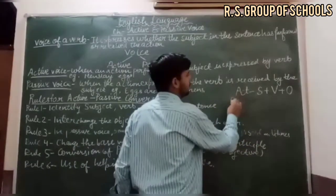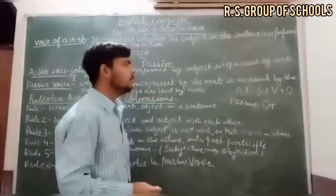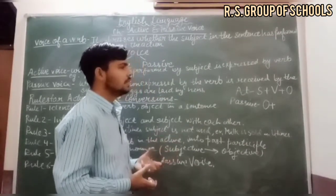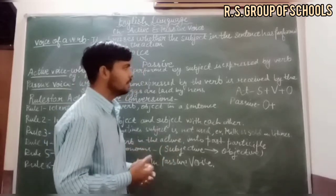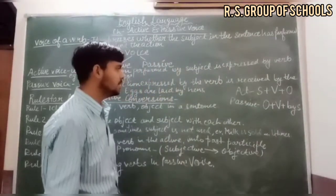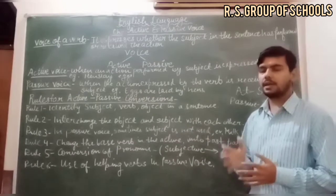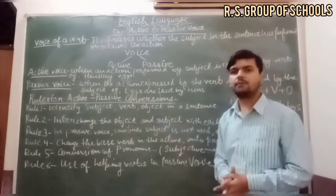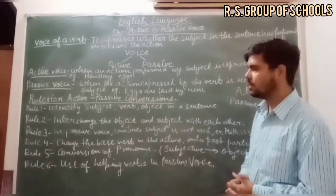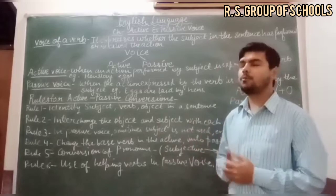In passive voice, the object comes first. The action is received by the subject through the verb. The structure becomes: object + verb (past participle) + by + subject. So Rule 1 is to identify the subject, verb, and object in the sentence. If there are two objects (direct and indirect), use the direct object as the main one.